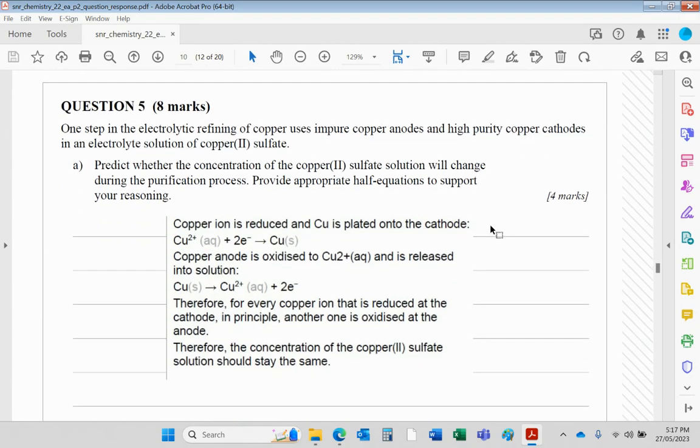Question 5: One step in the electrolytic refining of copper uses impure copper anodes and high purity copper cathodes in an electrolyte solution of copper(II) sulfate. Predict whether the concentration of the copper(II) sulfate solution will change during the purification process and provide appropriate half equations to support your reasoning. This is not strictly syllabus.